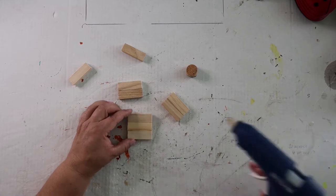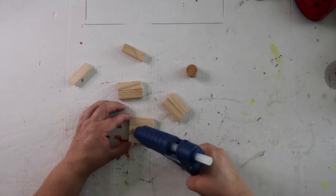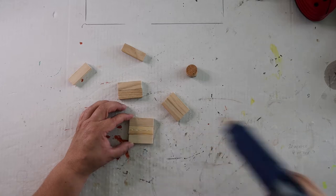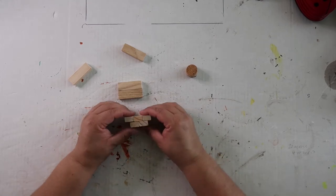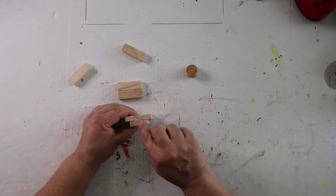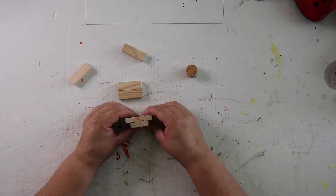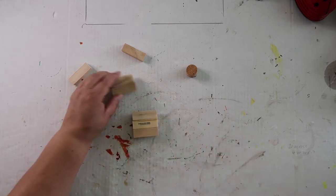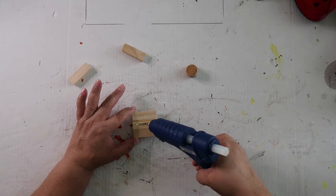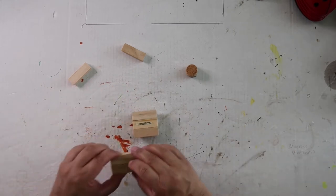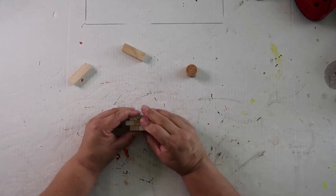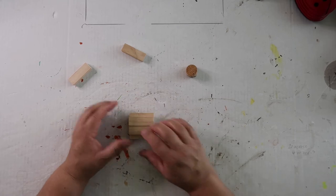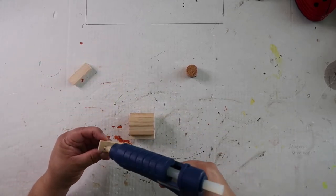To assemble we're just going to run a bead of glue down the center of the middle one. I try to center this line here with the center of this but it doesn't have to be perfect. Then again, doesn't have to be perfect but lining it up just to make it look nice. We're going to add one on each end.